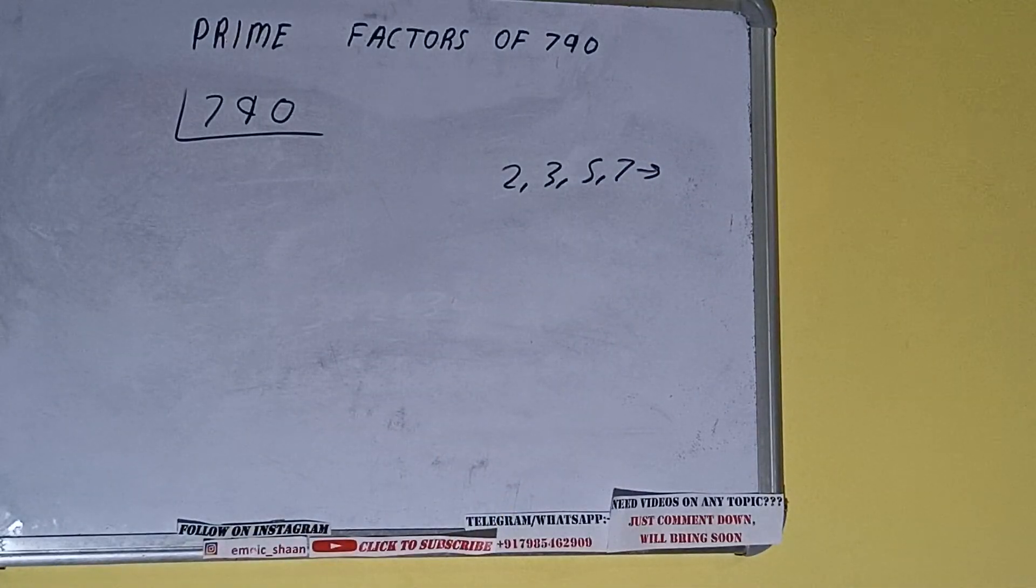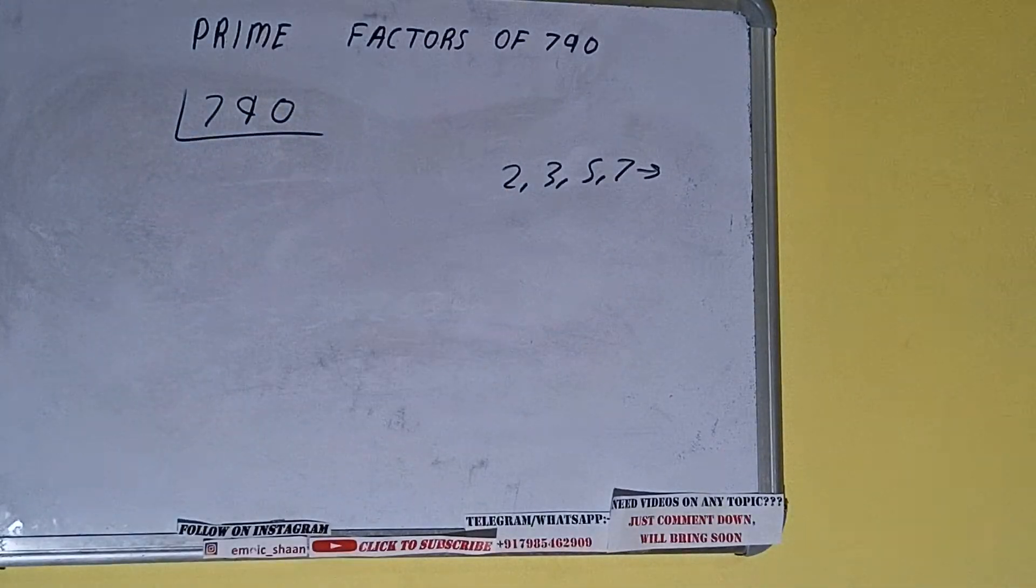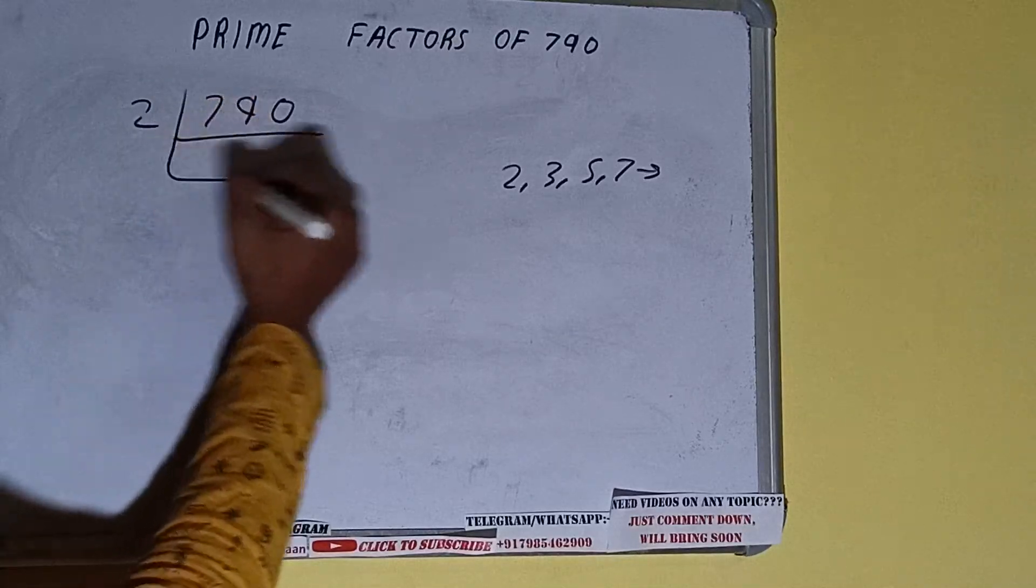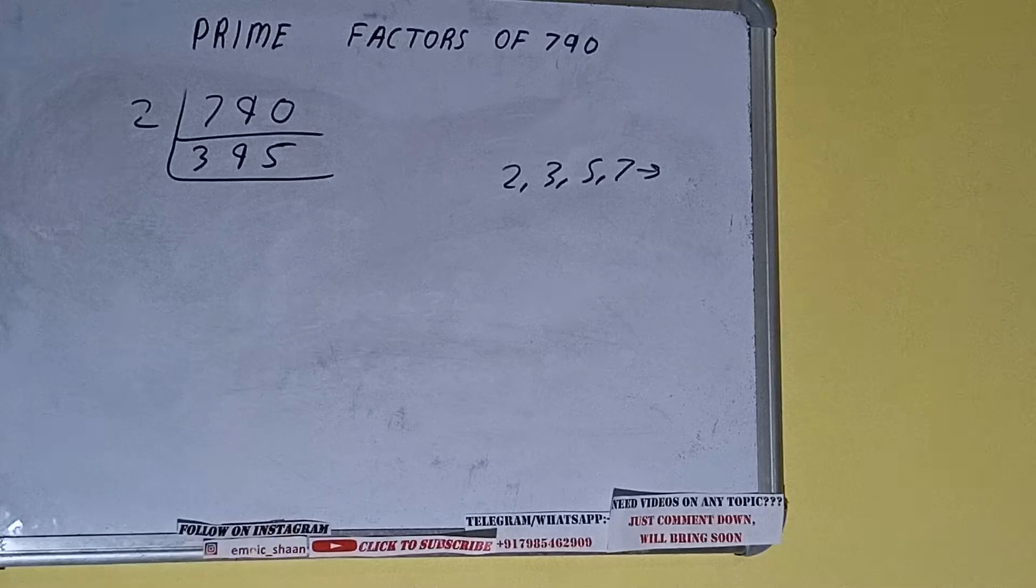We'll check with the lowest prime number we have, that is 2. Is the number 790 divisible by 2? Yes, it is because the number is even, and we'll be having 395. Is 395 divisible by 2? The answer is no because the number is odd.